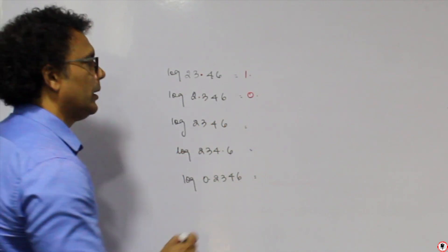Let me repeat the characteristic rule. Before the decimal, 2 digits means characteristic is 2 minus 1 = 1. One digit means 1 minus 1 = 0. Four digits means characteristic is 3. Three digits means characteristic is 2. With one leading zero after the decimal, characteristic is bar 1. Two leading zeros gives bar 2. With the number 7, one digit gives characteristic 0.